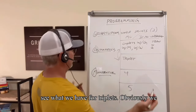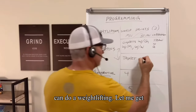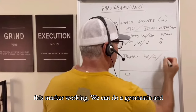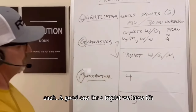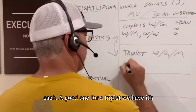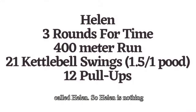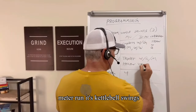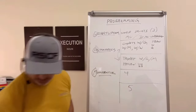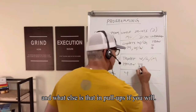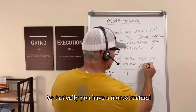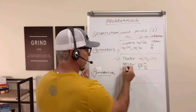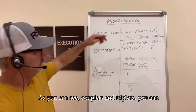Then you have triplets. Obviously we can do a weightlifting, a gymnastic, and a monostructural — one of each. A good one for a triplet is called Helen. Helen is a 400-meter run, kettlebell swings, and pull-ups. So basically you have a monostructural, a weightlifting, and then gymnastics. Helen is a big staple — a big famous one. Couplets and triplets, you can put these together in any way, shape, or form.